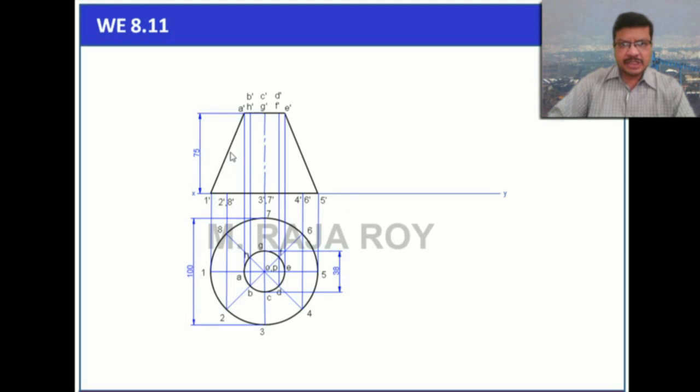Then consider this slant edge on the XY line to represent the axis inclination. Here, take a random point, call that as A. From that random point, take this length. This length is nothing but this A1 length.